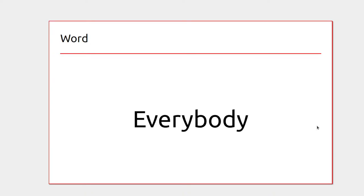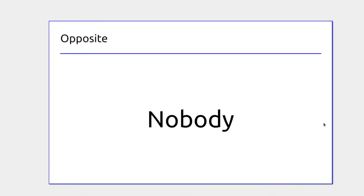If someone asked who would like a slice of cake for dessert, everybody — all 10 people — might put their hand up. The opposite might be who wants broccoli for dinner, and then nobody puts their hand up — zero people.